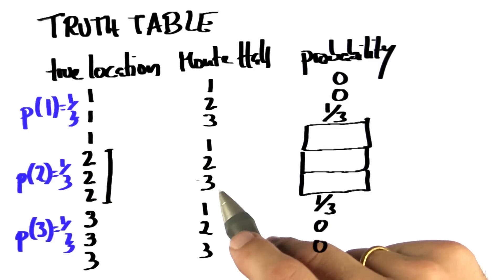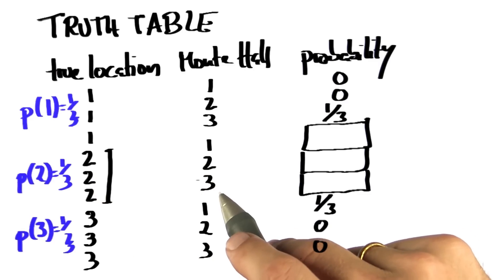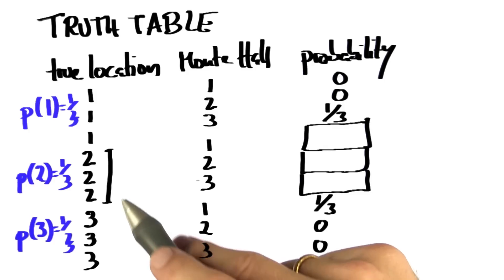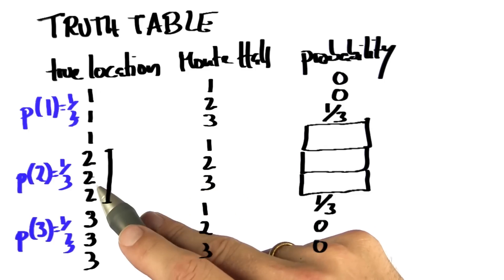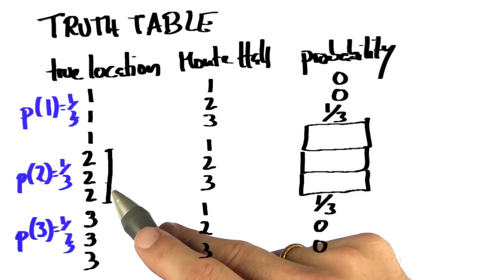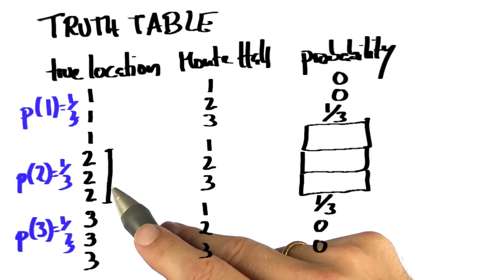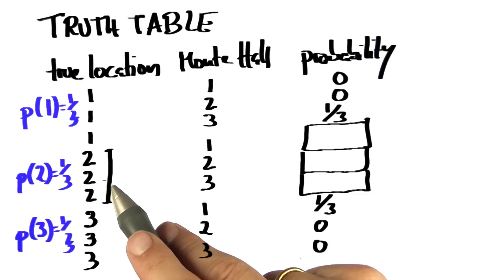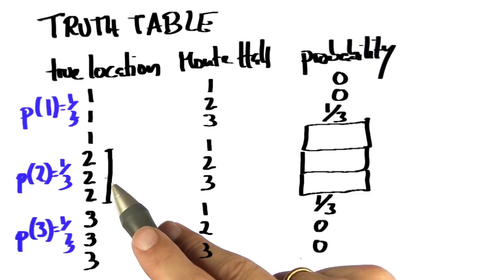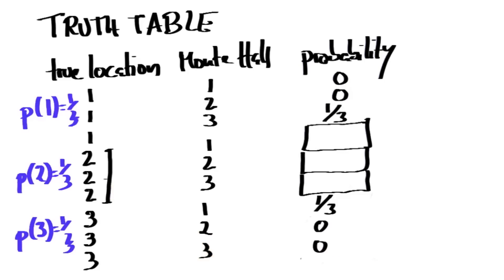What is the joint probability for the location to be true and Monty shows me 2? In this case, 2 and 3 — clearly, the true location is 2, and I've picked 2. So in this specific situation, Monty has a chance to choose from the two other doors, and say he picks them at 50% chance random.